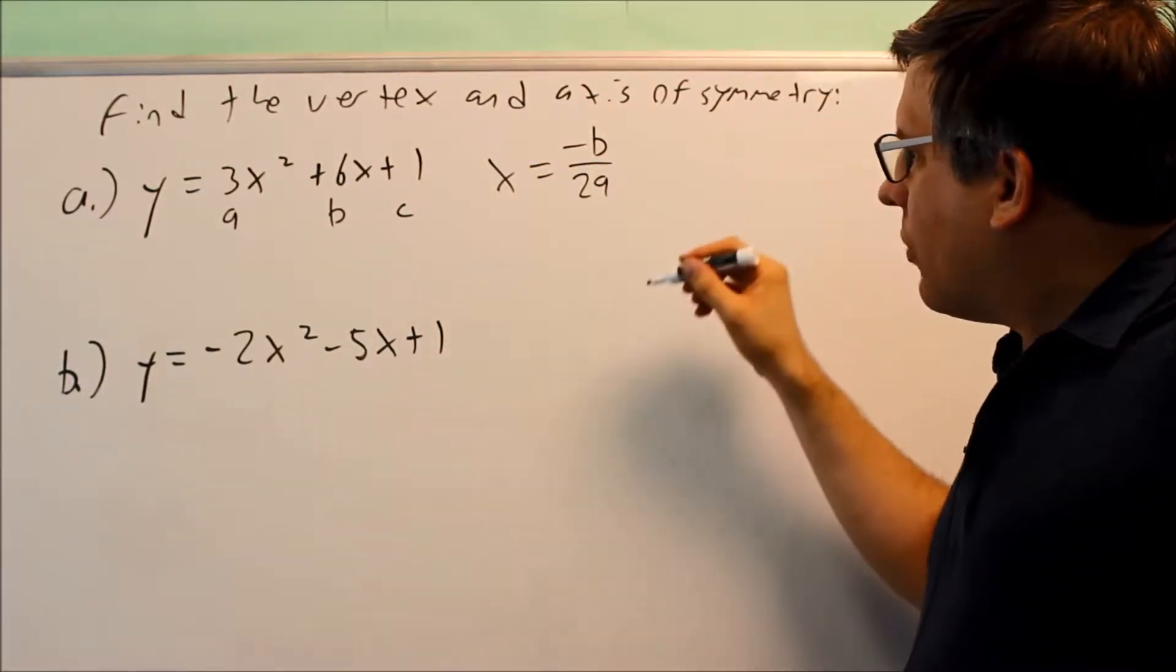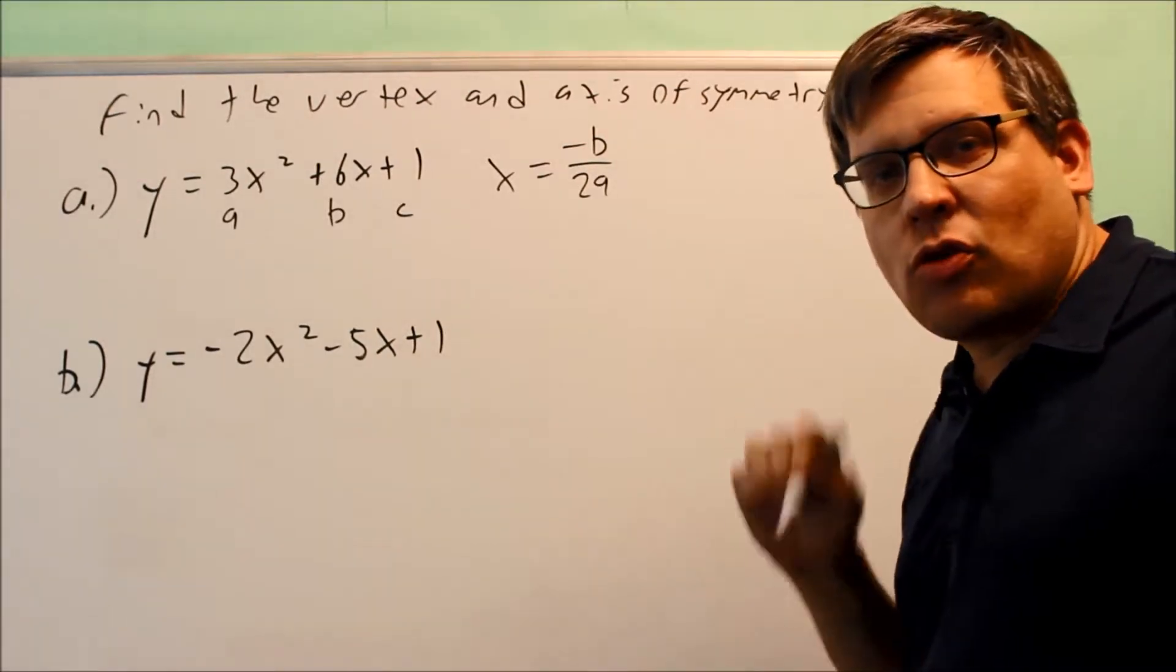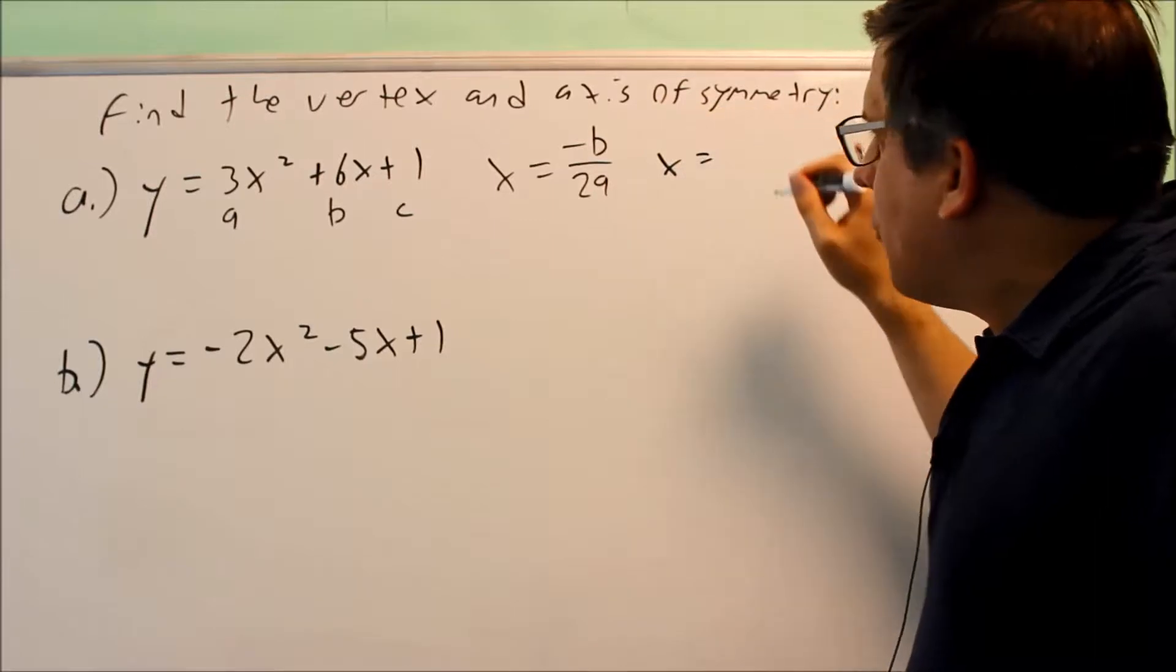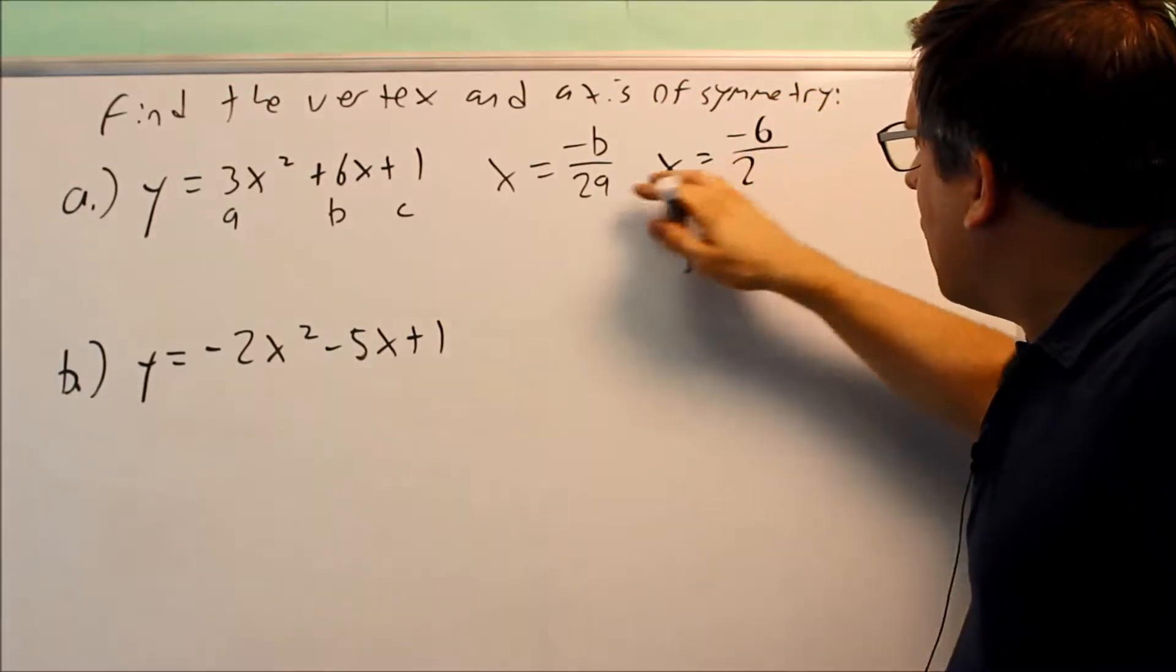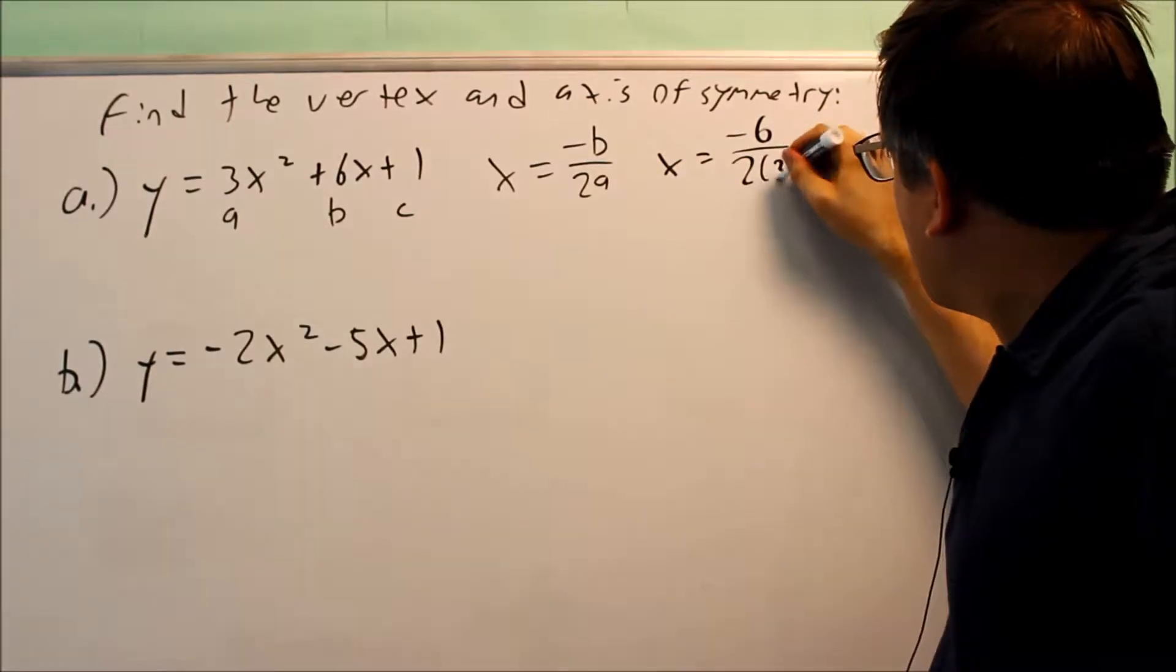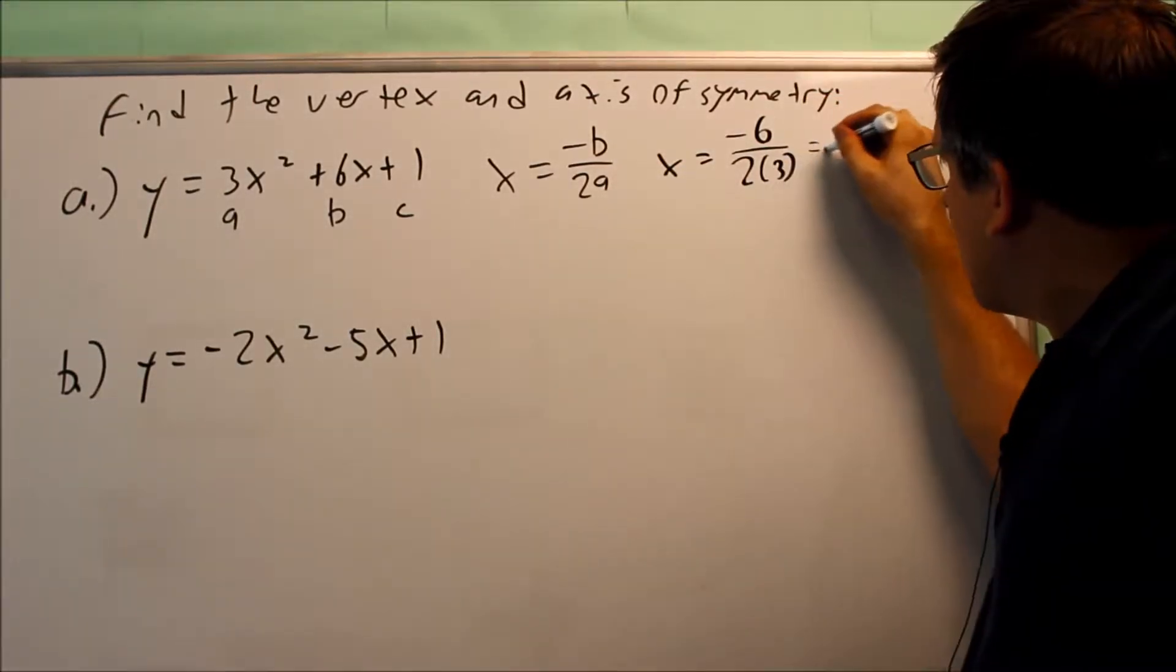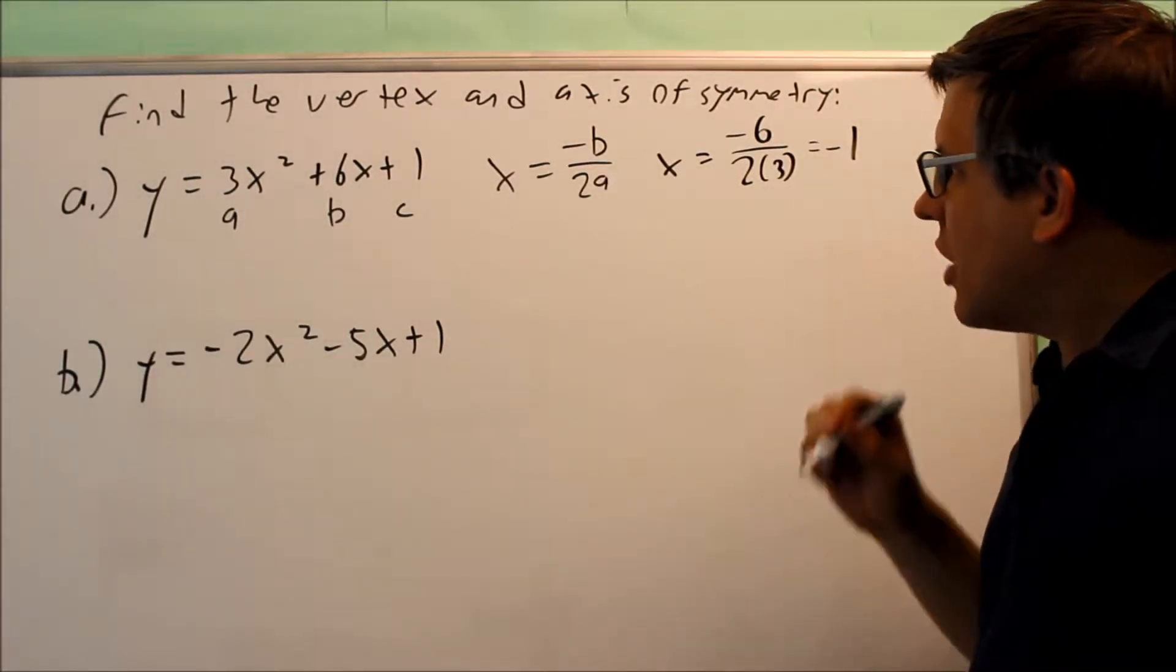So if we know that information, we can put it into this formula, and that's automatically going to tell us the x-coordinate for our vertex. So to do that, you have negative b over 2a, that's negative 6 over 2 times a, or in this case it's going to be 2 times 3. And if we work that out, we get negative 6 over 6, gives us negative 1 for the x-coordinate.